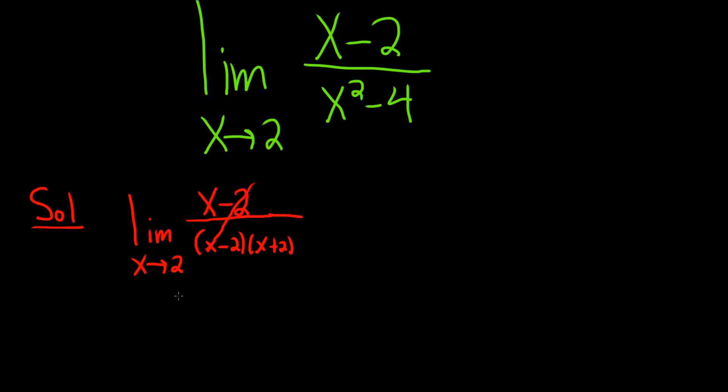At the end, the x minus 2 is canceled, so we still write the limit sign. x is approaching 2. It's really important to always write the limit sign until you take the limit. This is 1 over x plus 2.